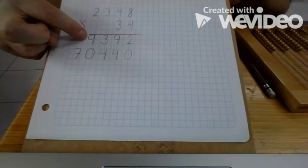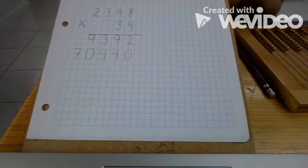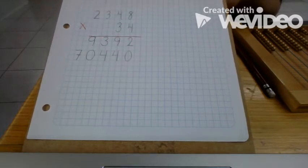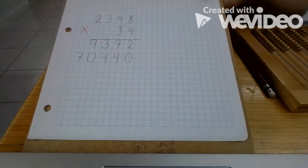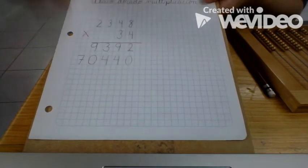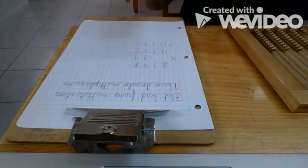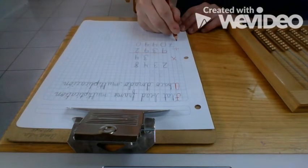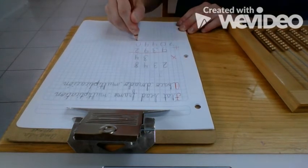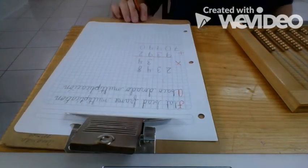Now I have my two partial products. What am I going to do with those numbers? Remember, when we multiply we have to add our partial products when we are finished. So I need to add my two partial products, and I'm going to put my addition symbol. When we add numbers together we always start in the units place.